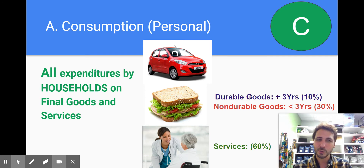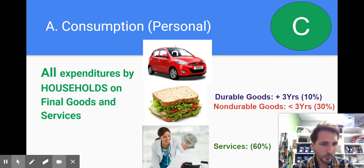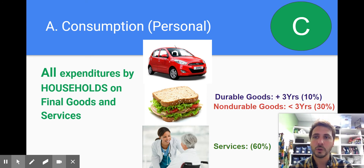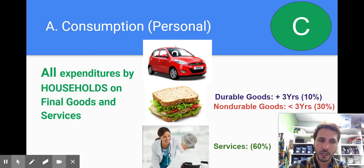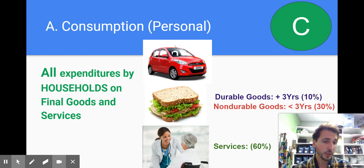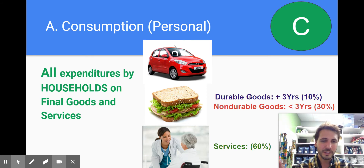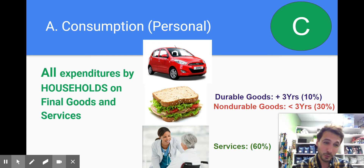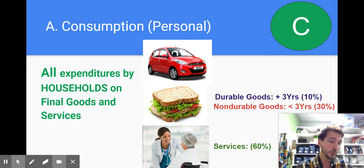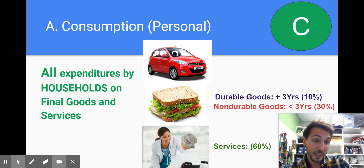First is consumption, also called personal consumption. These are all the expenditures by households on final goods and final services. So when you buy a car, a sandwich, or you pay for a massage, or you pay for a doctor's visit, or you pay for somebody to wash your car, or you buy a new shirt, or you buy new shoes, or you buy some food — all of these things are considered consumption. Remember, it's only final goods, not intermediate goods.